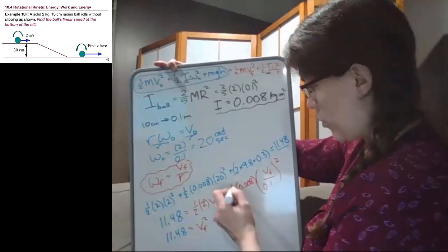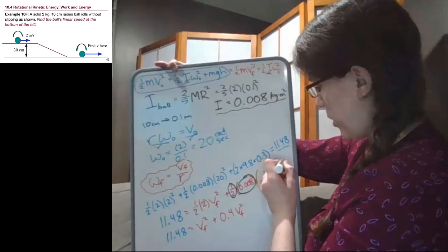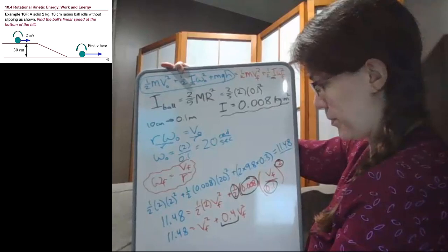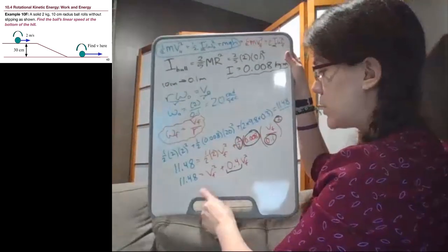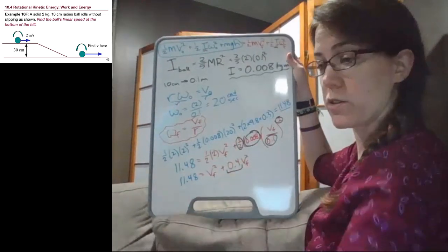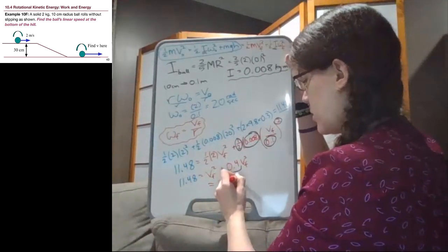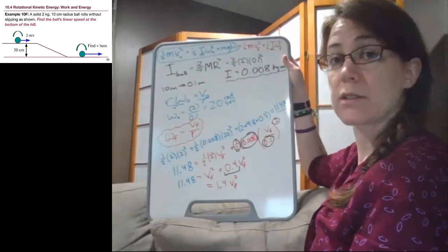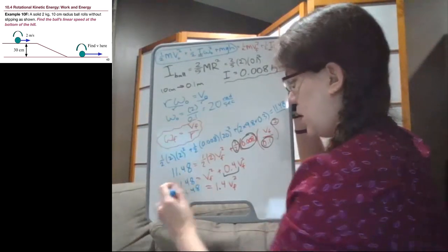We're trying to find all of the numbers on that second term attached to v final squared, and we're going to get 0.4 v final squared. On this right side, we have v final squared plus 0.4 v final squared. That becomes 1.4 v final squared. It's like if we had 2x plus 3x, that becomes 5x.